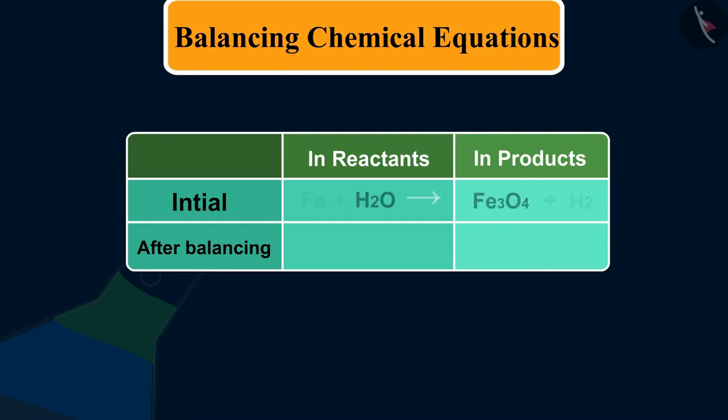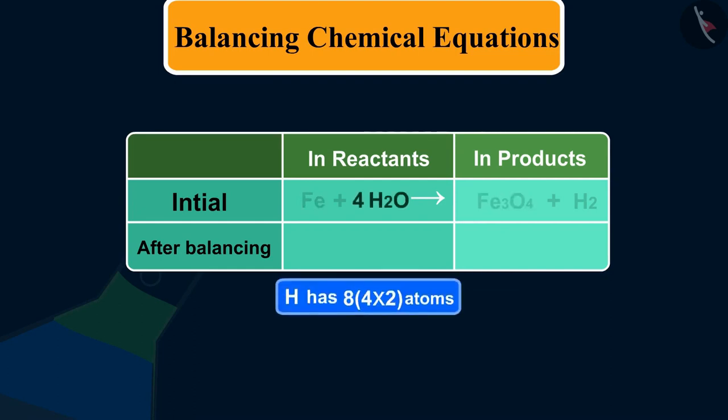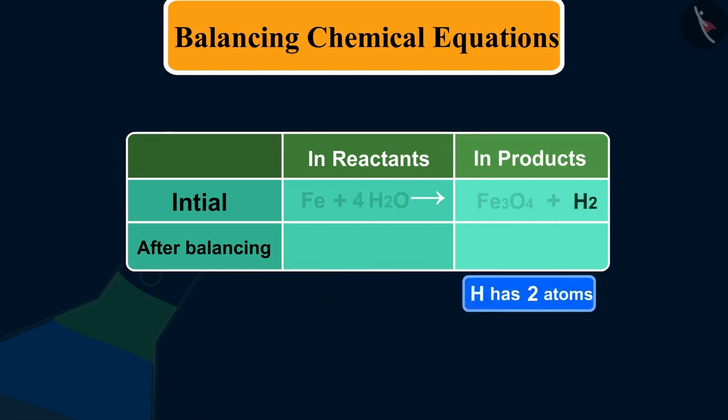Fe and H atoms are still not balanced. Fe has 1 atom in LHS and 3 atoms in RHS, and H has 8 (4 by 2) at LHS and 2 atoms at RHS.